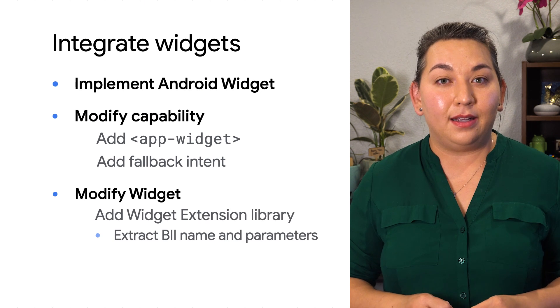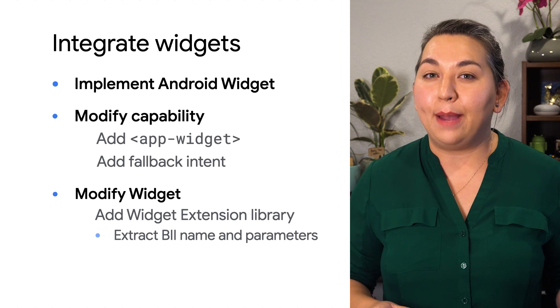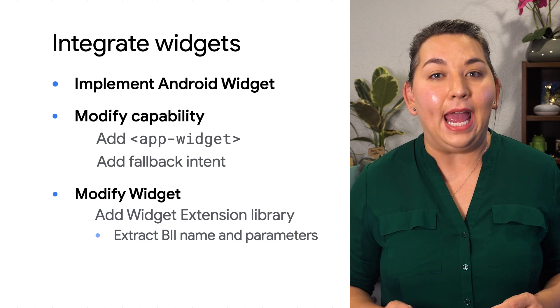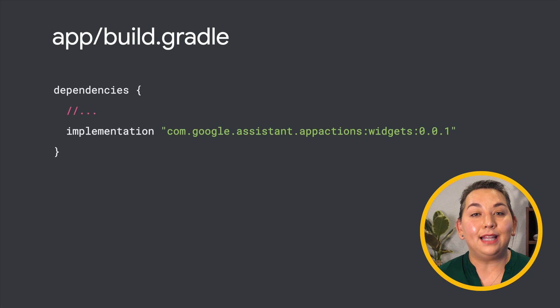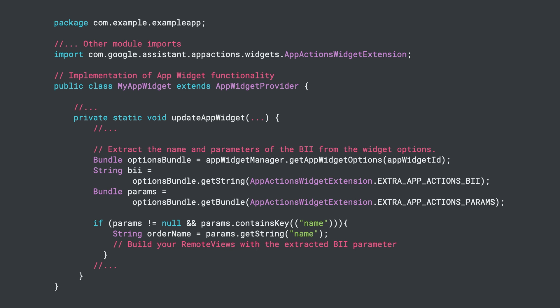Now that the capability is updated, the Android widget needs to be modified. It will first need to extract the built-in intent name and its parameters to construct the widget for the Assistant to use. This is done by adding the widget extension library and then extracting the information. Add the library to the dependency section of build.gradle. Here's an example of a class that extracts the built-in intent name and parameter from the widget options bundle — it imports the App Actions Widget Extension class, accesses the data sent via the Android intent as extras, and uses bundles and the App Actions Widget Extension to pull the built-in intent name and its parameters. Then you can use that data to construct the UI of the widget.